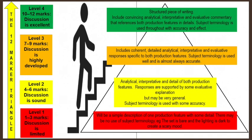You will receive seven to nine marks — level three — if you have included a coherent, detailed, analytical, interpretive and evaluative response which is specific to both production features, and subject terminology is used well and is almost always accurate. You will receive ten to twelve marks — level four — if you have produced a structured piece of writing that includes convincing, analytical, interpretive and evaluative commentary referencing both production features in detail, with subject terminology used throughout with accuracy and effect. Be sure to give yourself a mark and figure out how you can improve to get a higher level or higher mark.